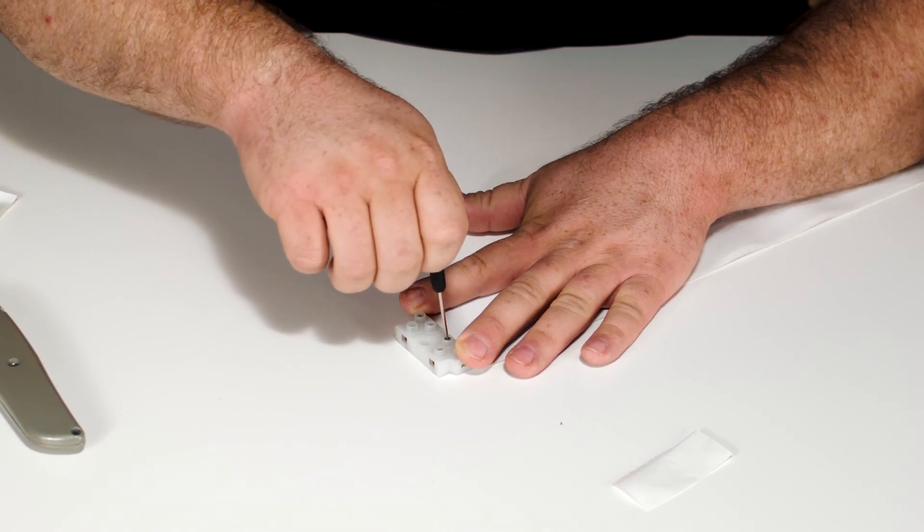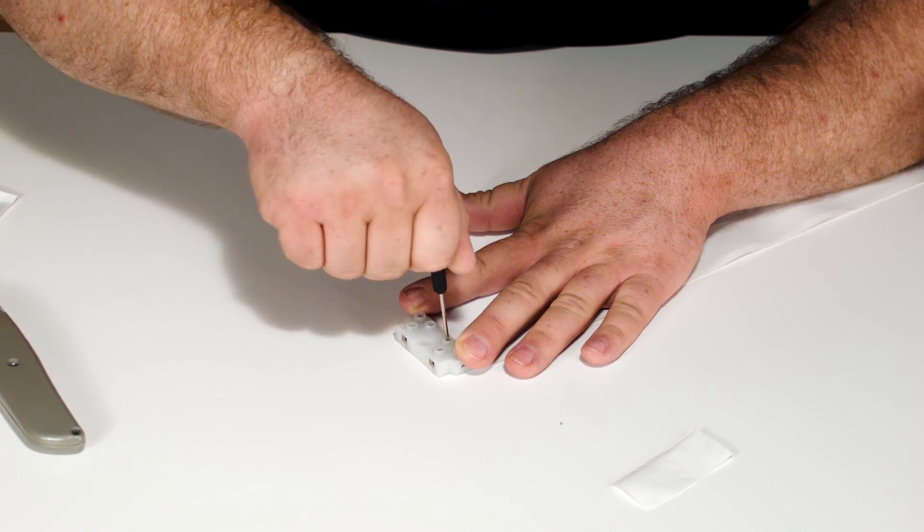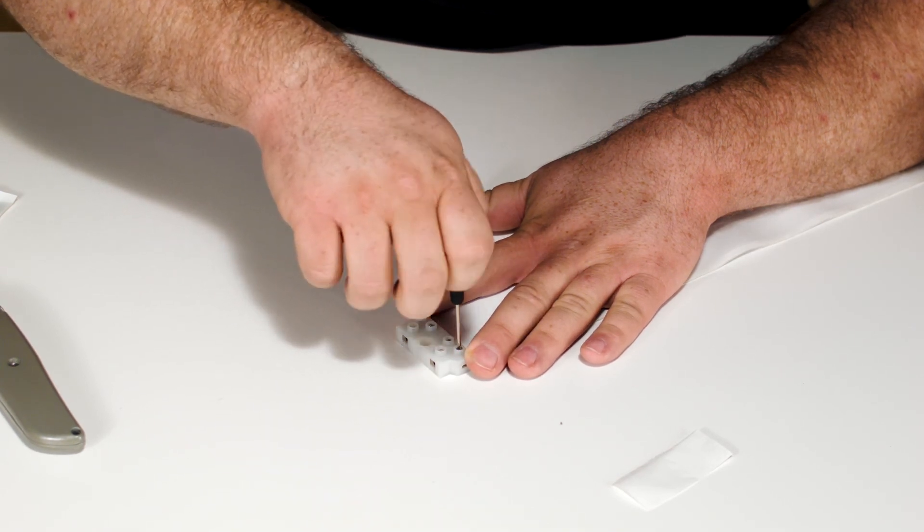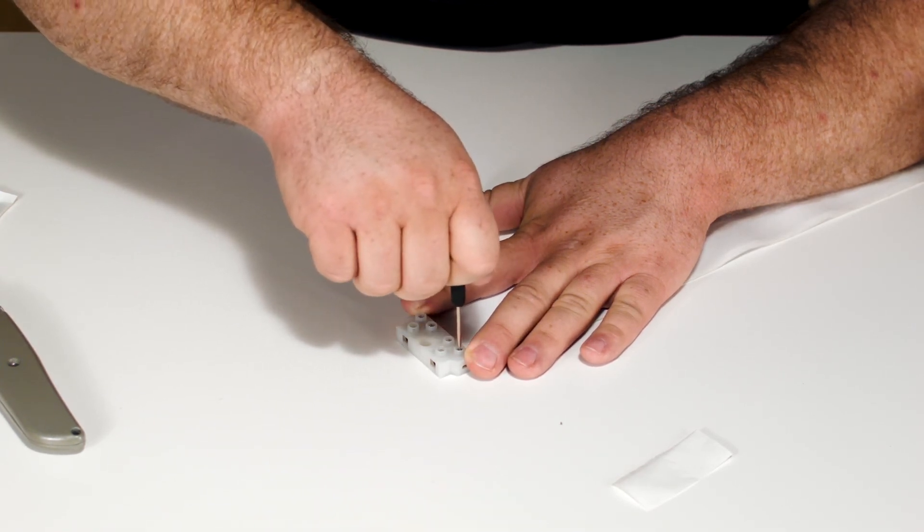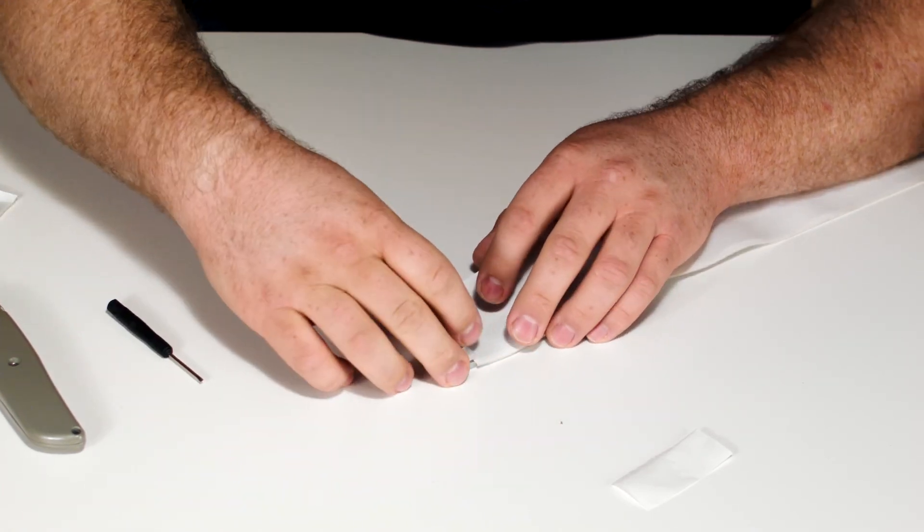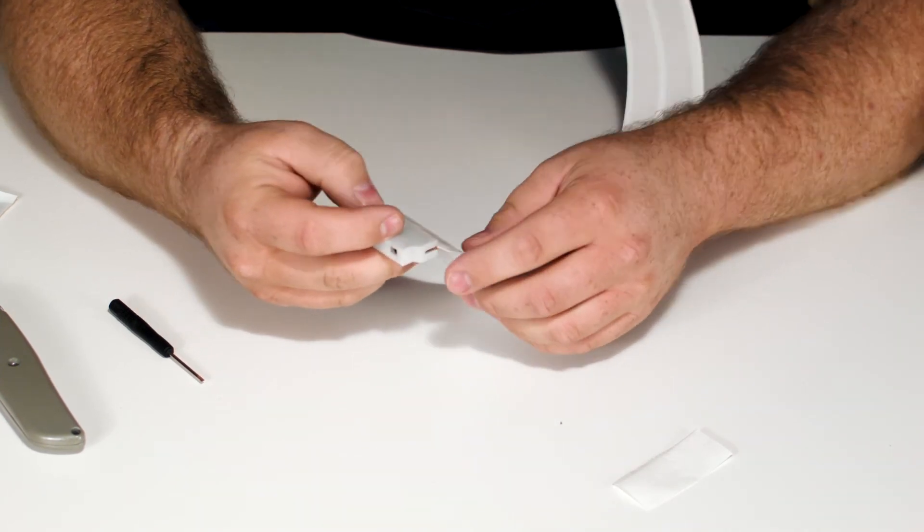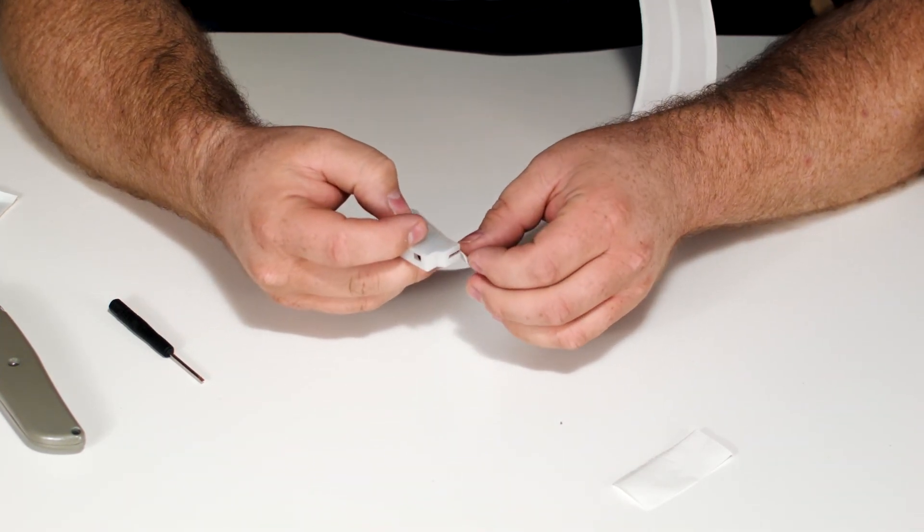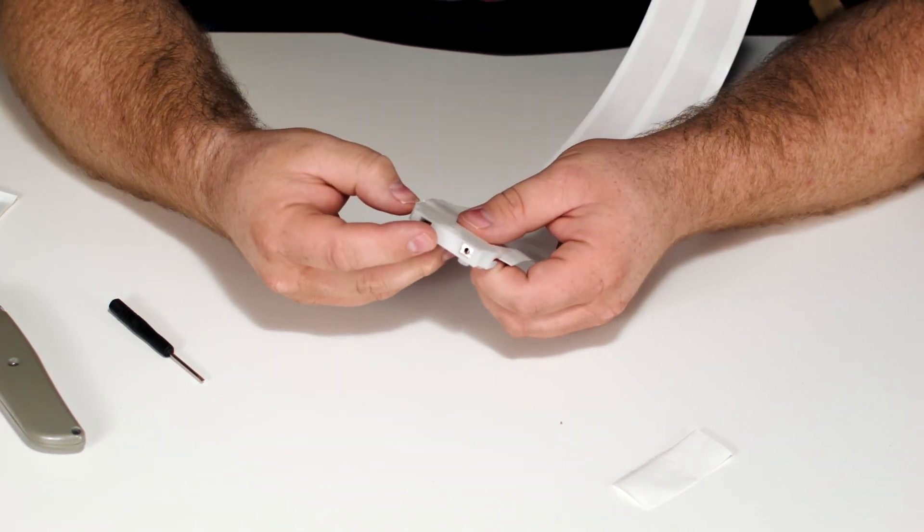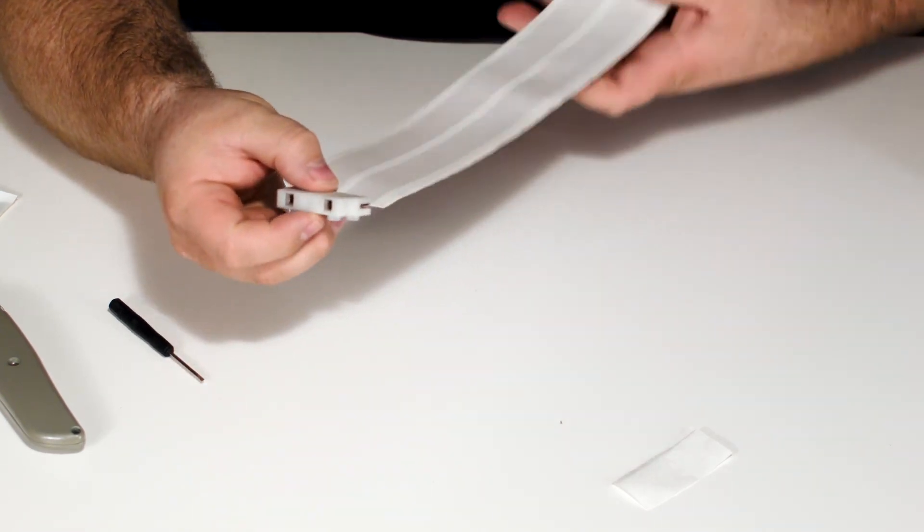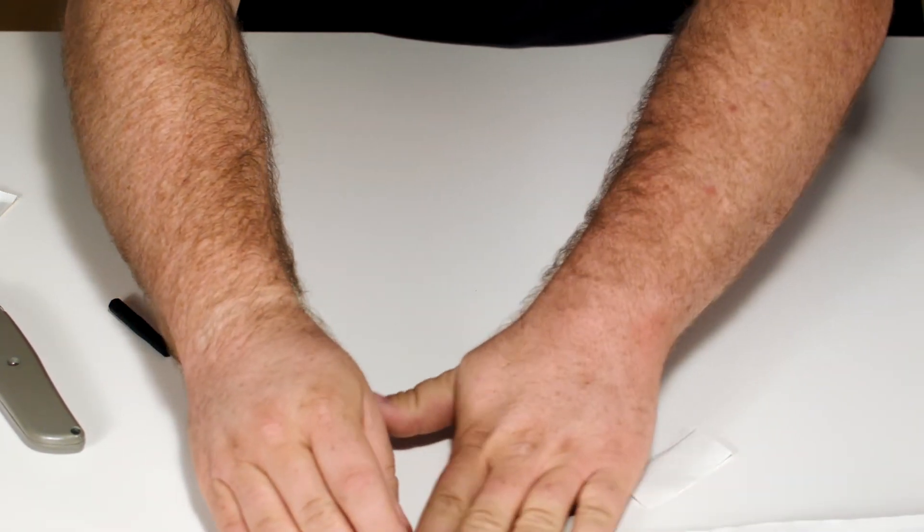Just make sure all four screws are tight. That will get you the most surface area on both sides and you get a clean appearance. From there, you're ready to peel off the rest of the backing and stick the whole ghost wire to the wall.